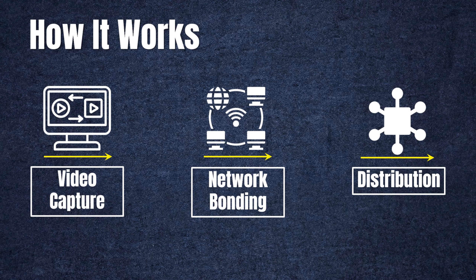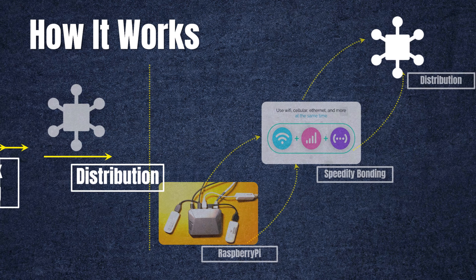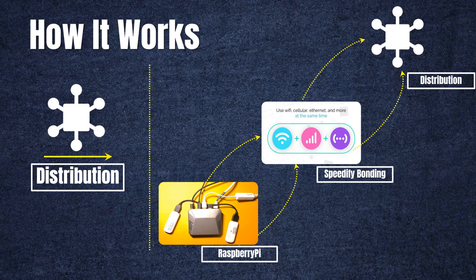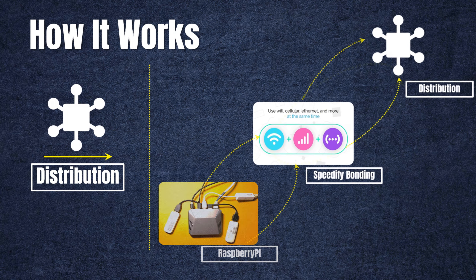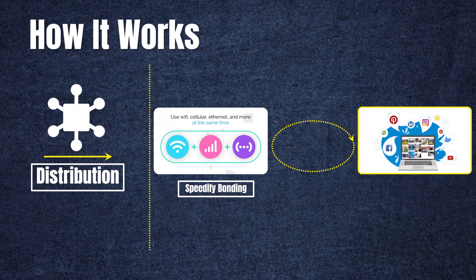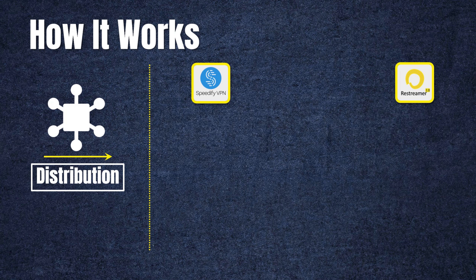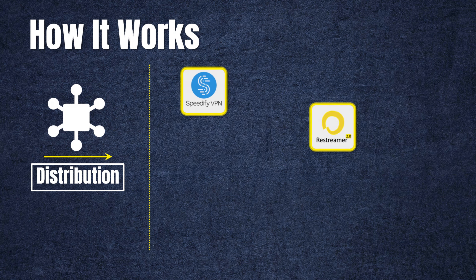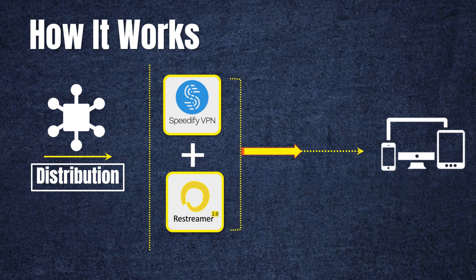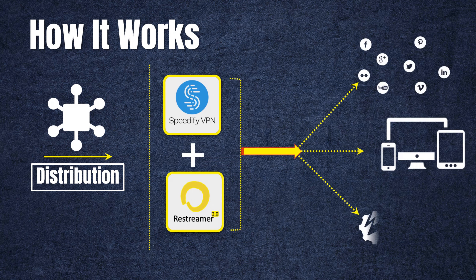Step 3: Multi-destination distribution. With Restreamer and Speedify working together, we achieve multi-destination distribution effortlessly. Restreamer acts as the bridge, enabling us to simultaneously stream our content to multiple platforms — such as YouTube, Twitch, Facebook, and more — all at the same time.